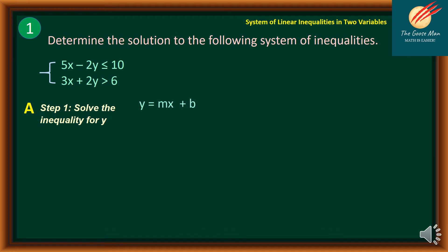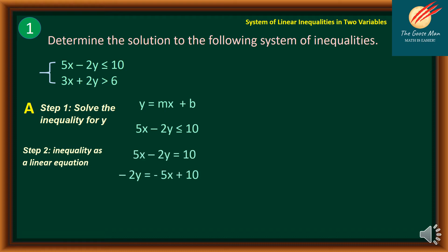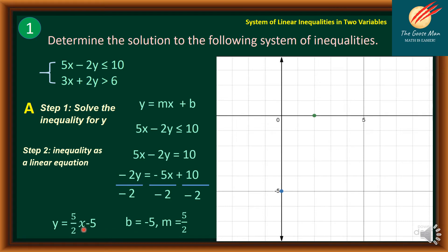Step number one: solve for the inequality for y using y = mx + b. For 5x minus 2y ≤ 10, we treat it as 5x minus 2y = 10. Solving in slope-intercept form: negative 2y = negative 5x + 10, then divide both sides by negative 2. So y = (5/2)x minus 5, where the y-intercept is negative 5 and the slope is 5 over 2.